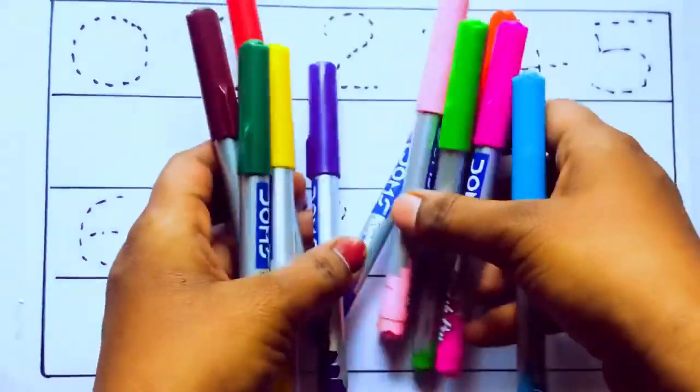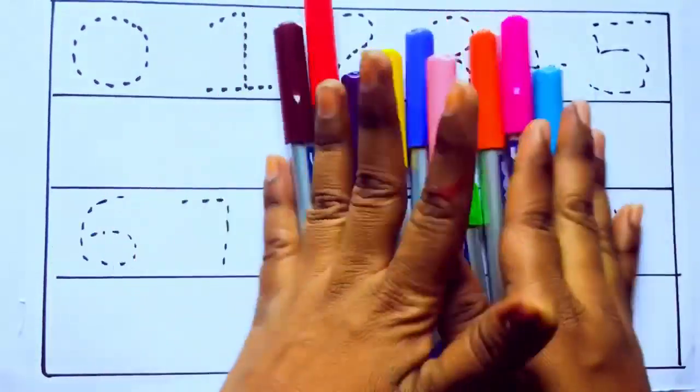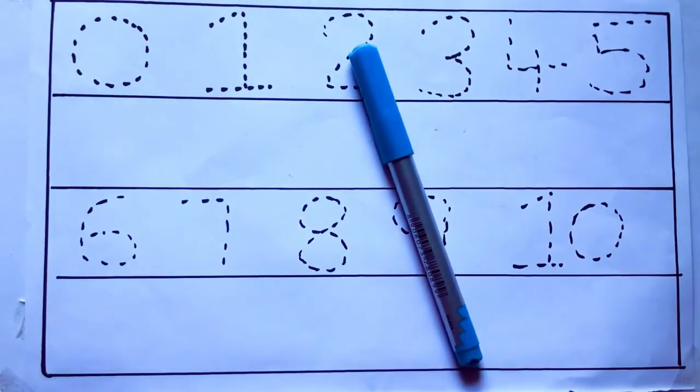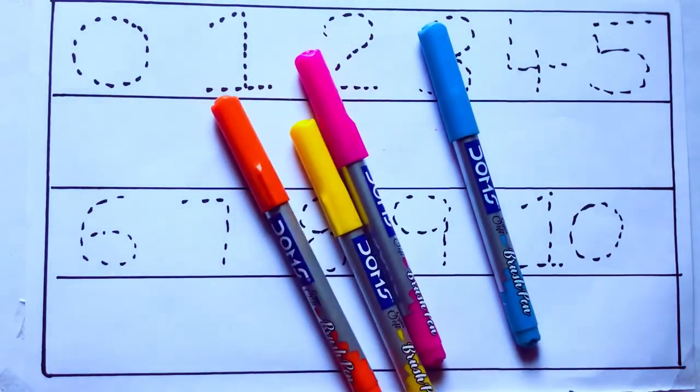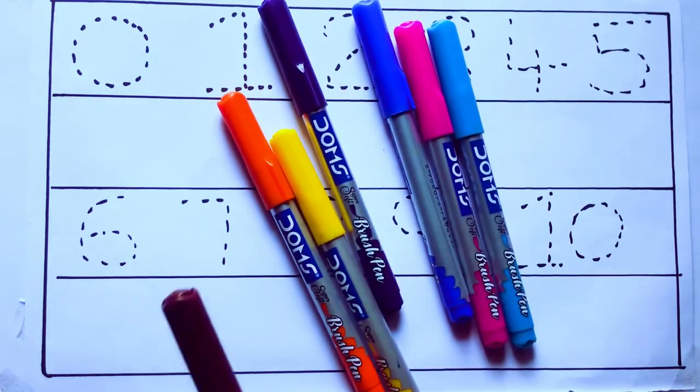Let's learn some colors. These are all the color pencils. Let's learn the names. Sky blue color, pink color, yellow color, orange color, violet color, blue color.